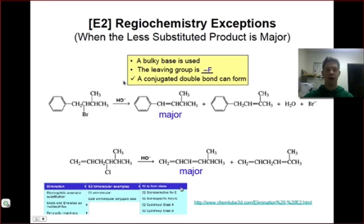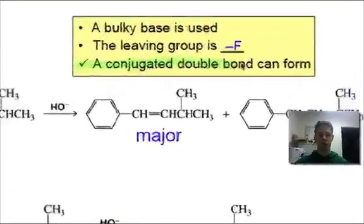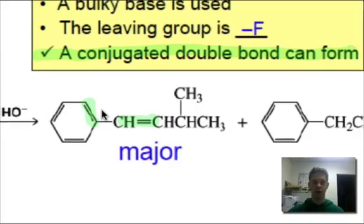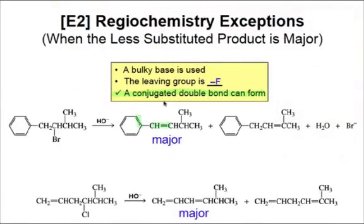A third exception occurs when a conjugated double bond can form. And by conjugated, we mean a double bond that's next to another double bond, quite simply. Conjugated systems are very stable because the interaction of adjacent p orbitals leads to a lowering of the energy of the conjugated system relative to the isolated double bonds alone.